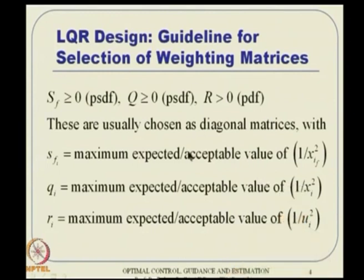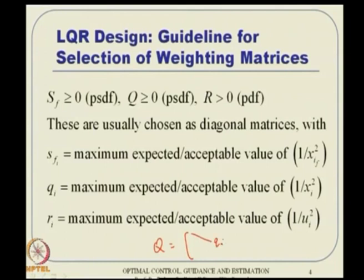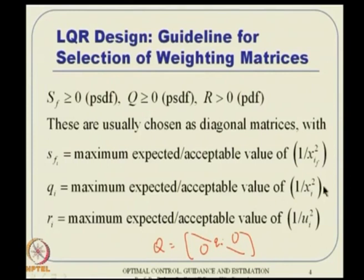Even within positive entries, how do you select the values? The guideline is: Q_i = 1 / (maximum expected or acceptable value of x_i)^2, and similarly R_i = 1 / (maximum acceptable value of u_i)^2. What this does is a kind of normalization — you end up with something like u_1^2 / u_1_max^2 + u_2^2 / u_2_max^2, and similarly for the states.